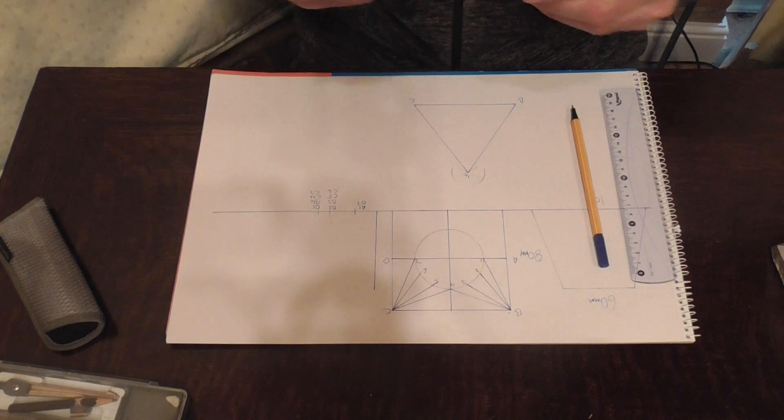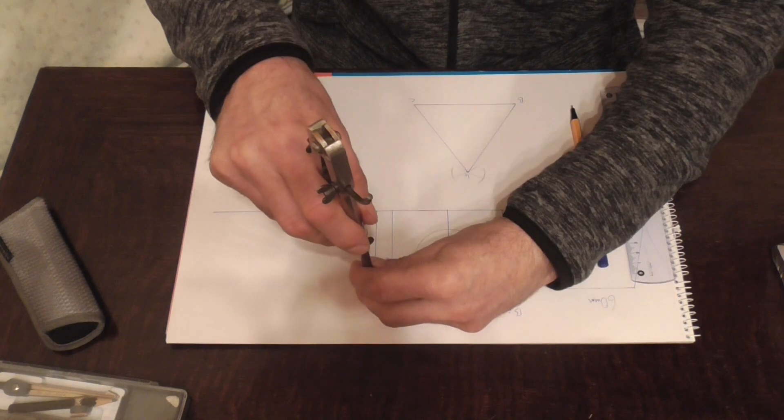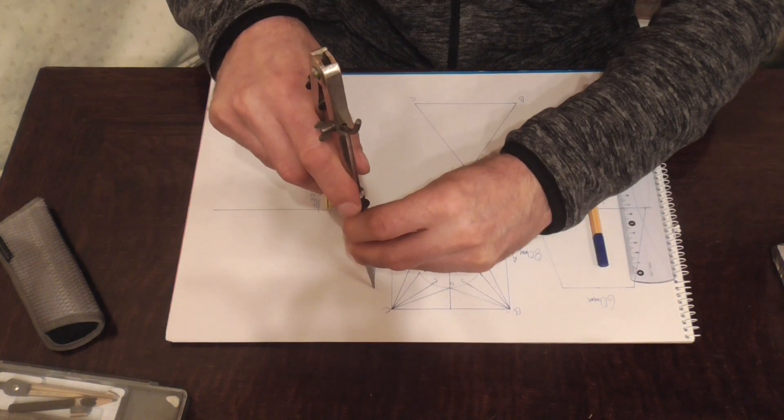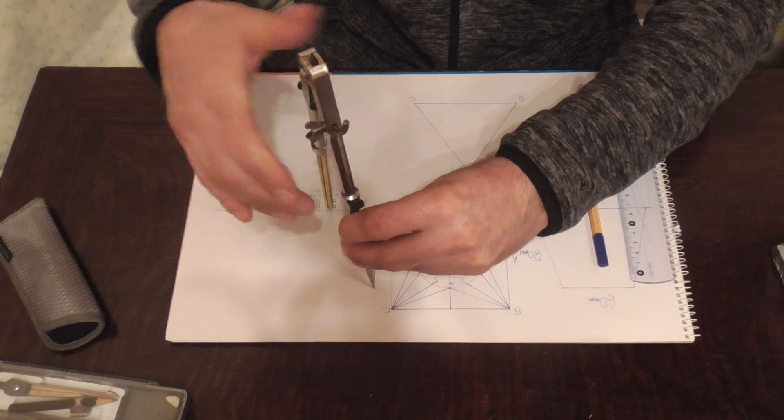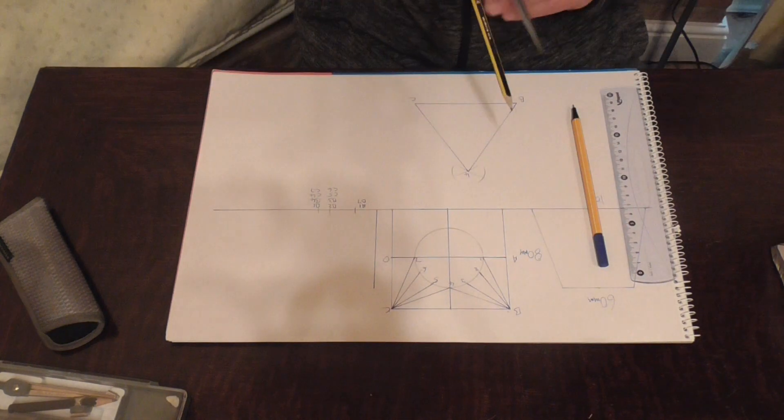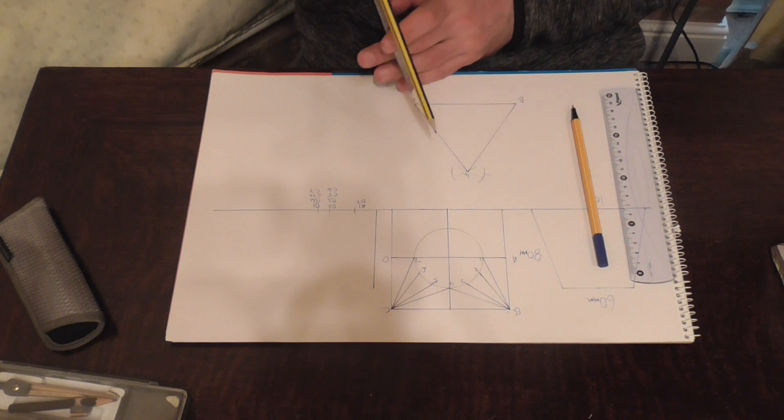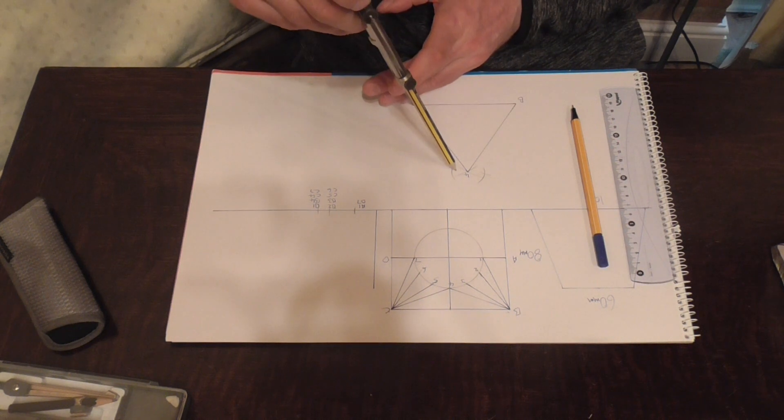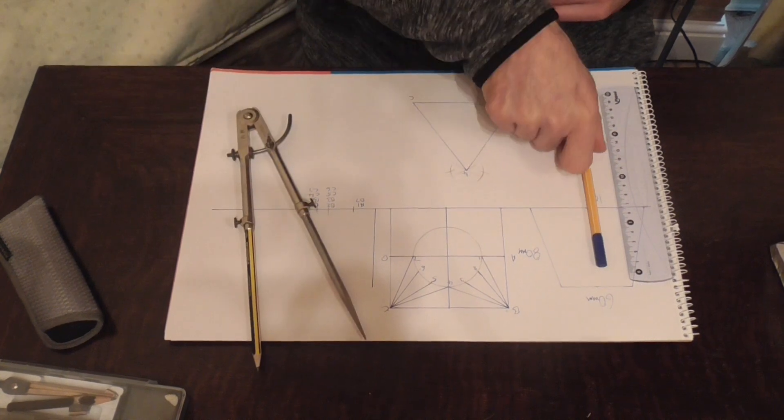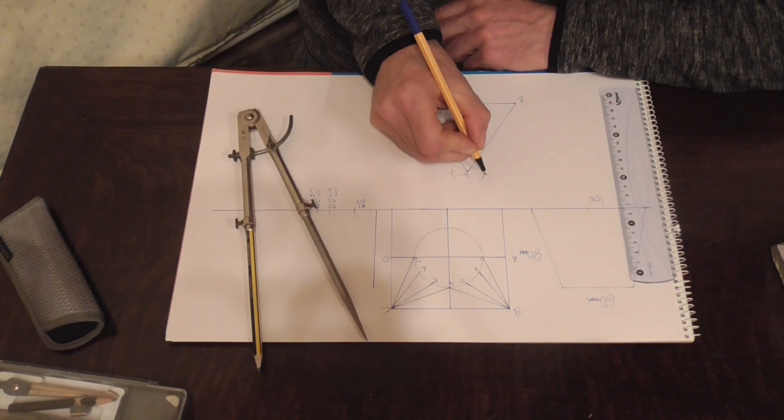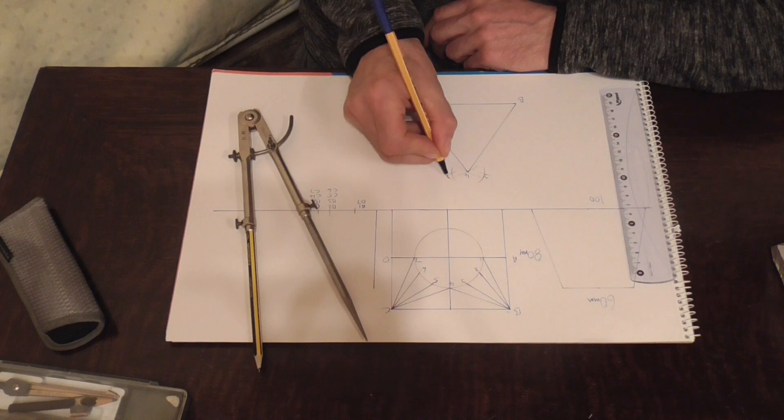And take our dividers and open them up to B2. Put a corner, put a scratch in. And we label those 3 and 5.